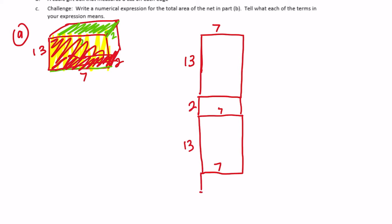Then we just need these two side pieces that are 2 by 13. I'm going to connect those onto the 13-inch sides. Those would fold up and make that rectangular prism.